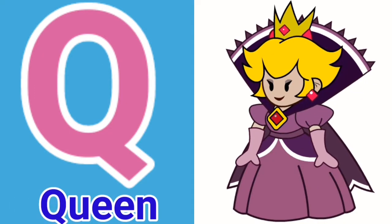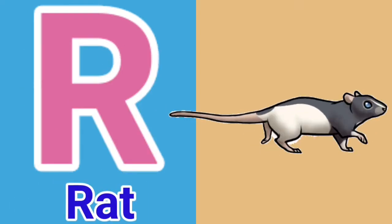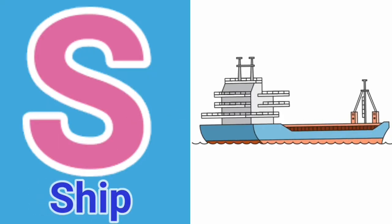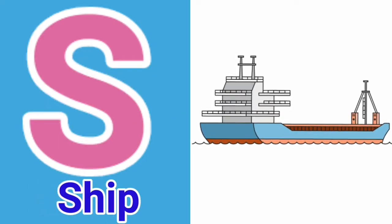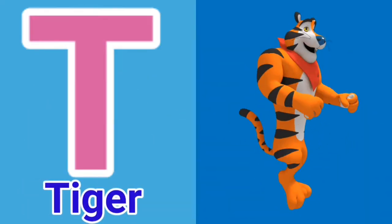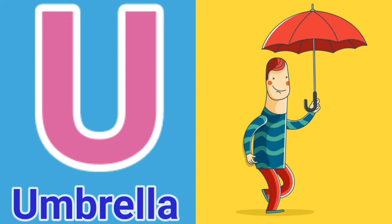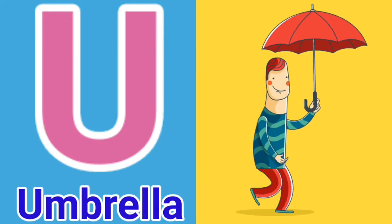Q for green, R for red, S for sheep, T for tiger, U for umbrella.